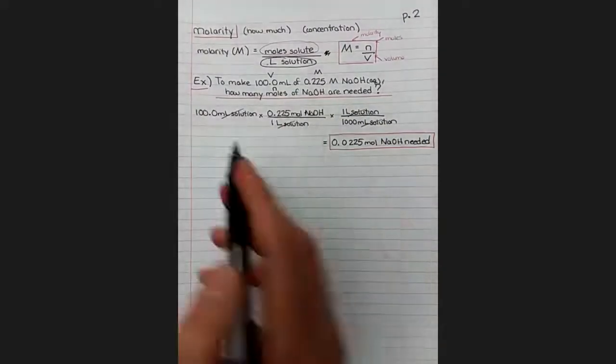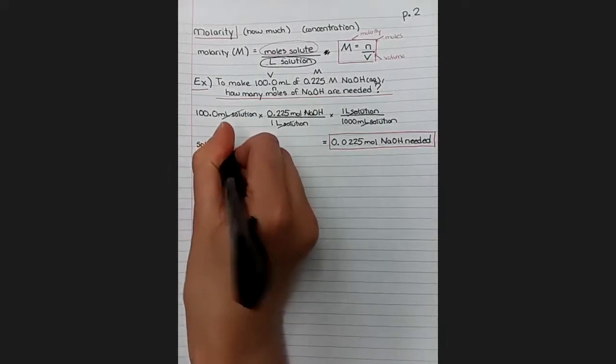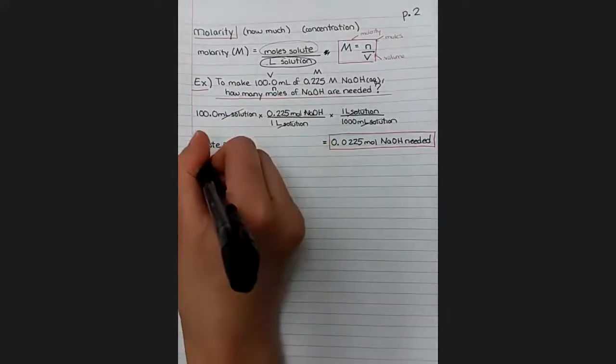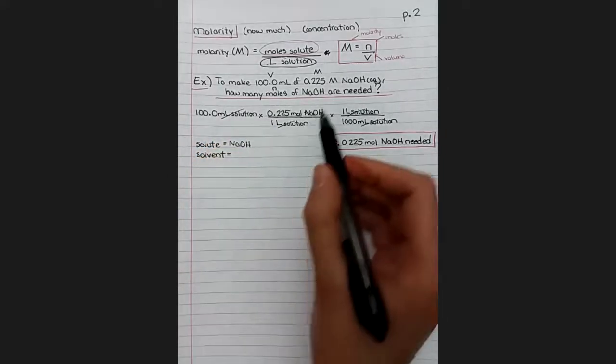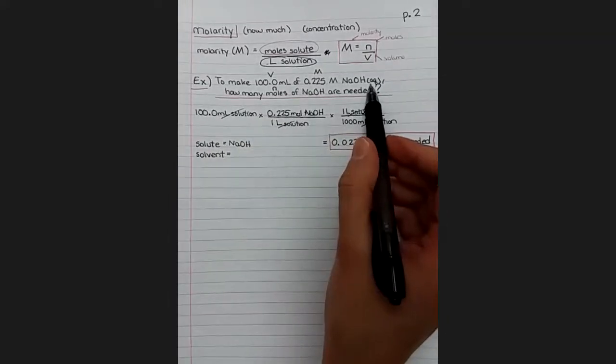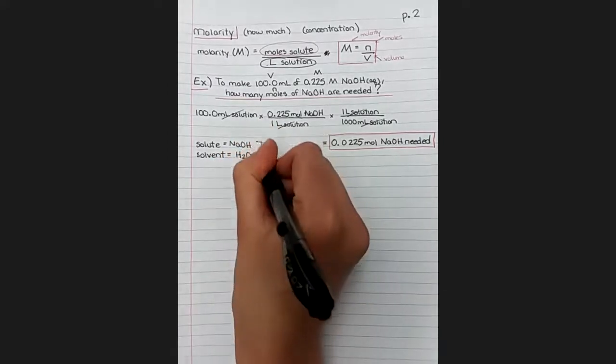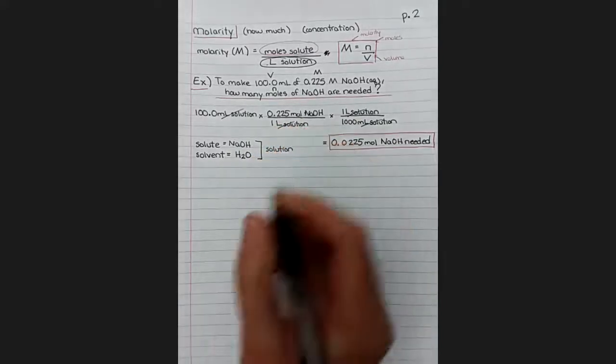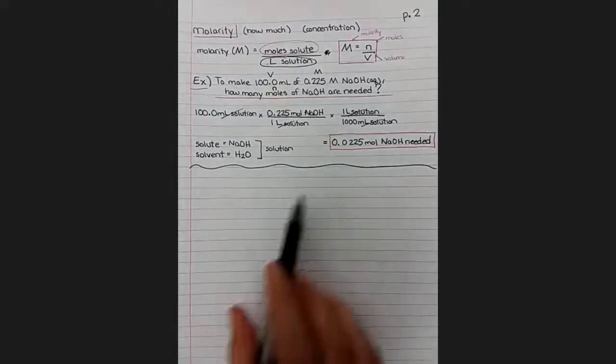So let's go back and identify our solute and solution, because I forgot to do that at the beginning. Our solute is the thing that's being dissolved, that's our sodium hydroxide. Our solvent was the thing it was dissolved in. It wasn't listed, it didn't tell us what it was, but we did see the little aq after sodium hydroxide, so our solvent is going to be water. And then both of those together make the solution.